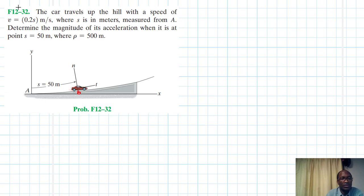We've been asked to determine the magnitude of the acceleration. Our v itself has been defined as a function of distance which is 0.2s. This is our v, and this is in meters per second.